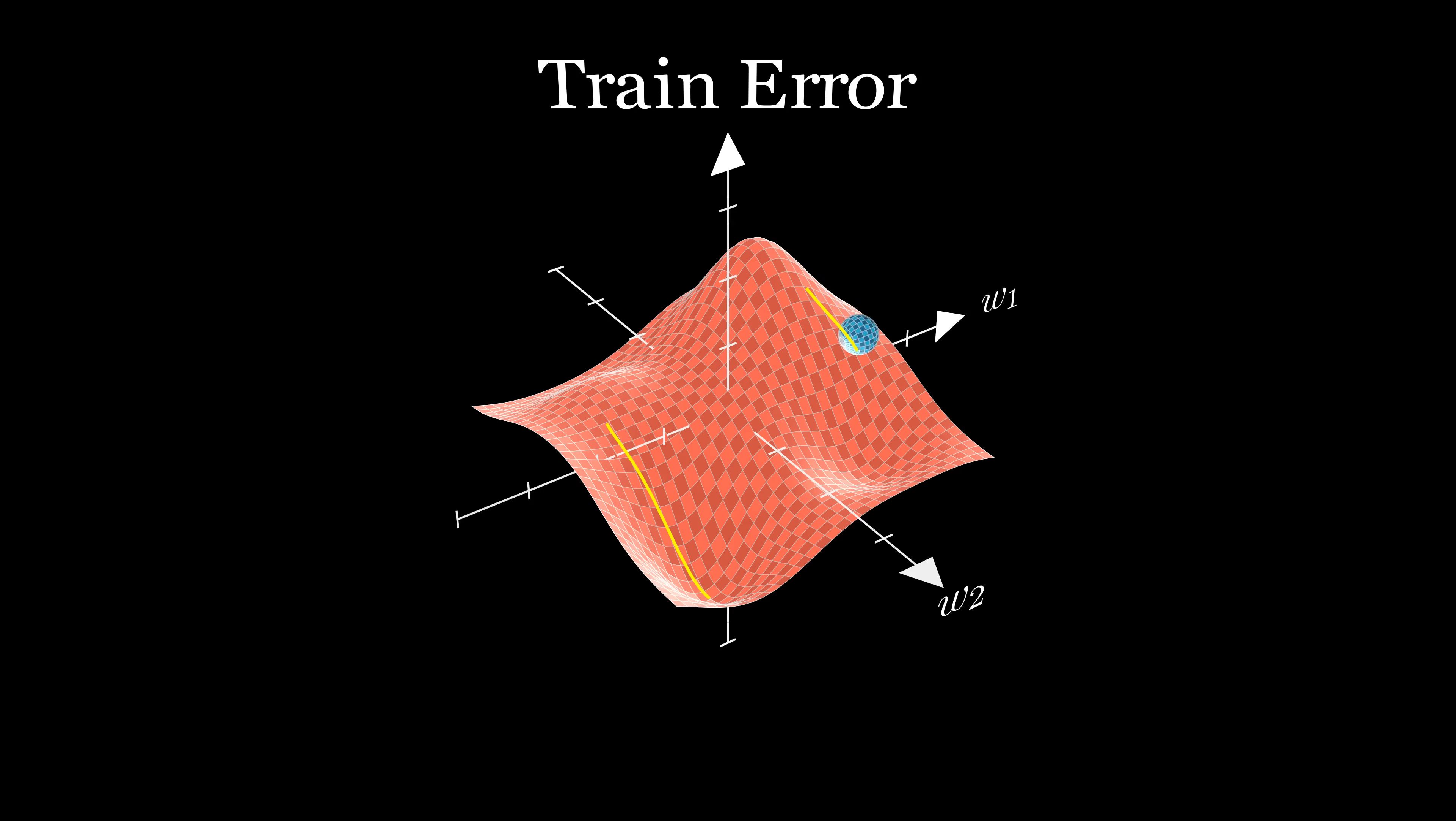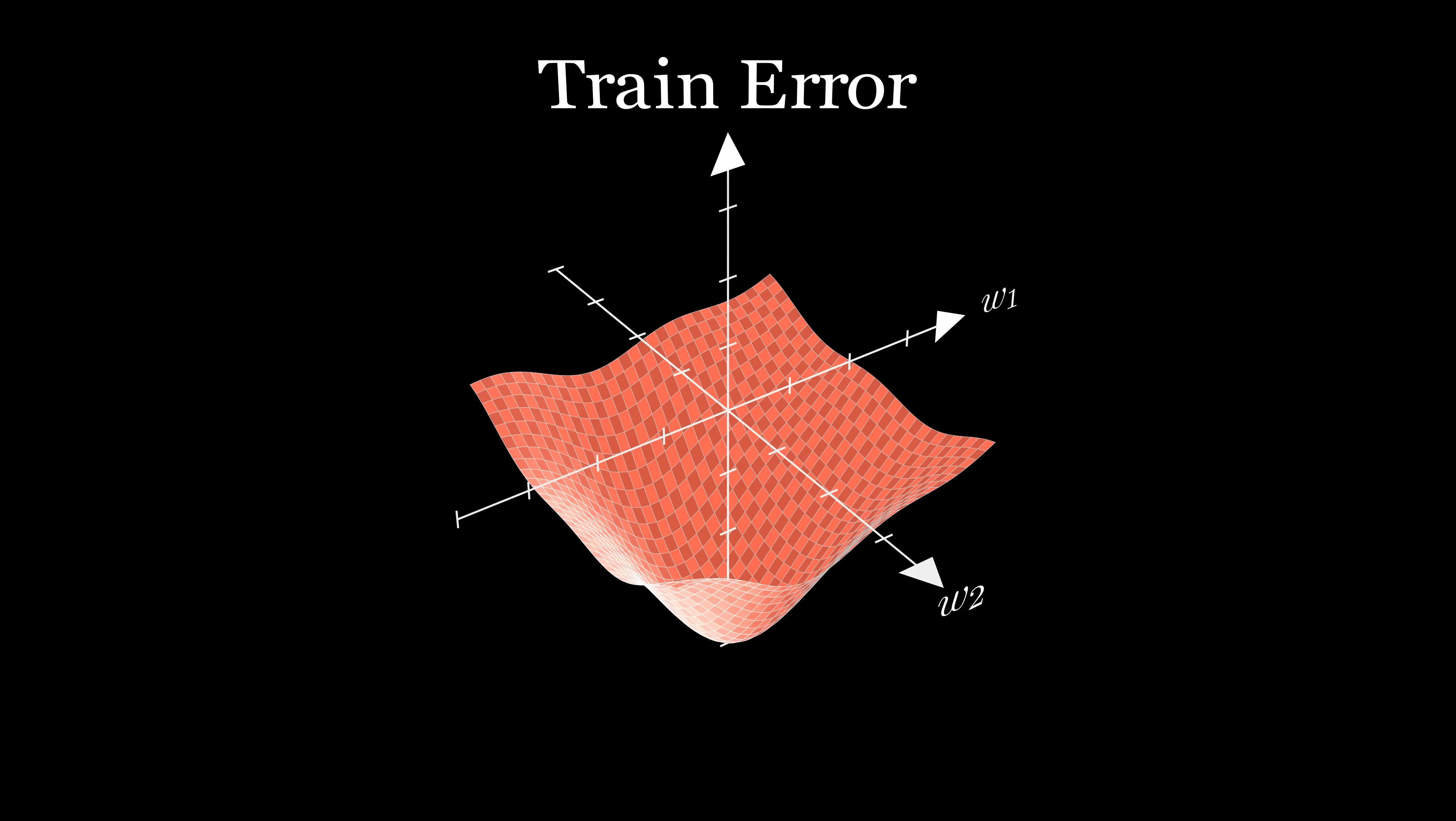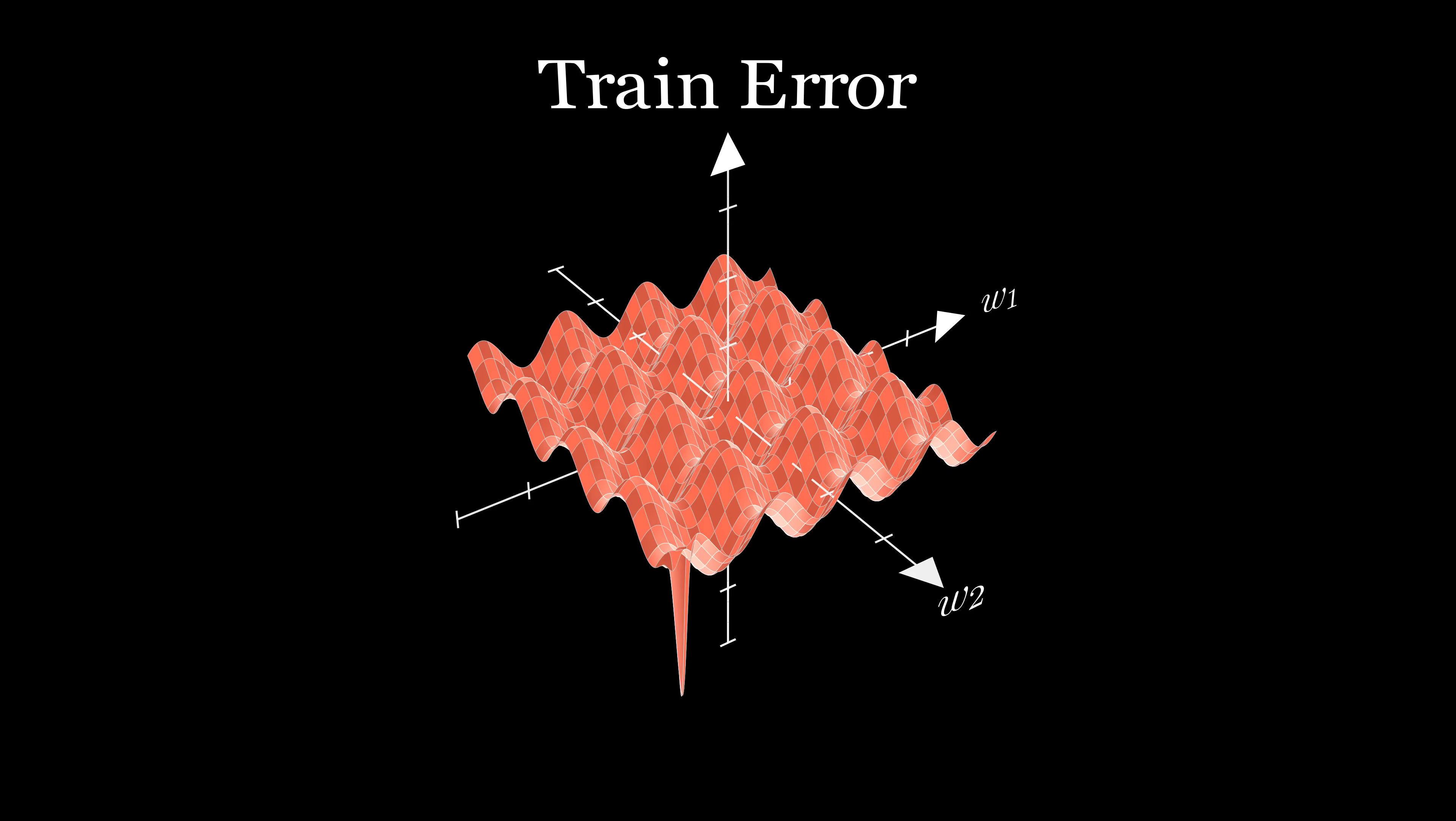The problem with this method is that you can get stuck in sub-optimal configurations. In such a configuration, making any small change to the weights results in more error, so the weights just stop changing. There are better configurations for the weights with lower error, but gradient descent will never find them. Because of this, depending on the initial weights you start with, you can end up with different final training errors. For large neural nets, it's really easy to fit the training data, so you end up with zero training error no matter where you start. However, for smaller networks, the initialization becomes crucial. For small enough networks, the vast majority of initializations result in sub-optimal performance.